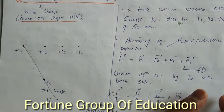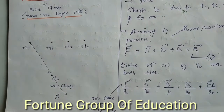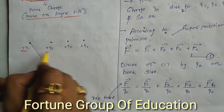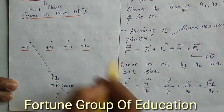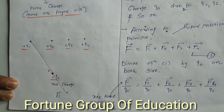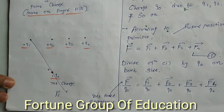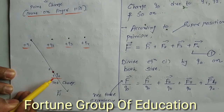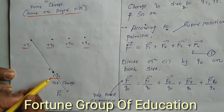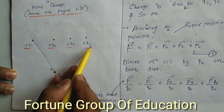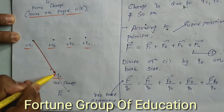The discrete system consists of point charges we can count. For example, these are point charges: plus q1, plus q2, plus q3, and plus q4. The point q0 at point P is known as a test charge. The test charge q0 experiences a force exerted on it due to charges q1, q2, q3, and q4 respectively.